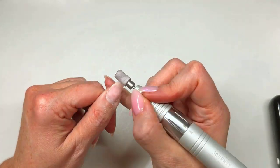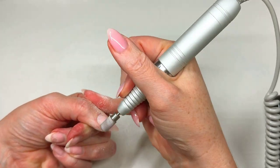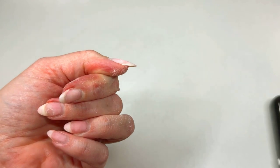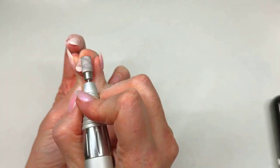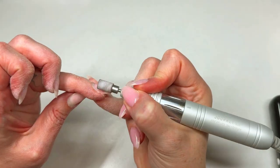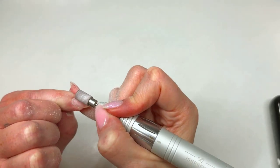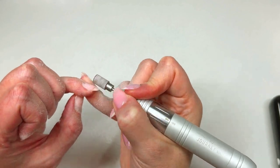Sanding bands kind of got a bad name when it came to nails because people were running them at such a high speed that it was creating a lot of heat. So we want to run it really slow. I'm at like 4,000 RPMs, basically the speed you need for it to continue moving without stopping, but no faster than that.